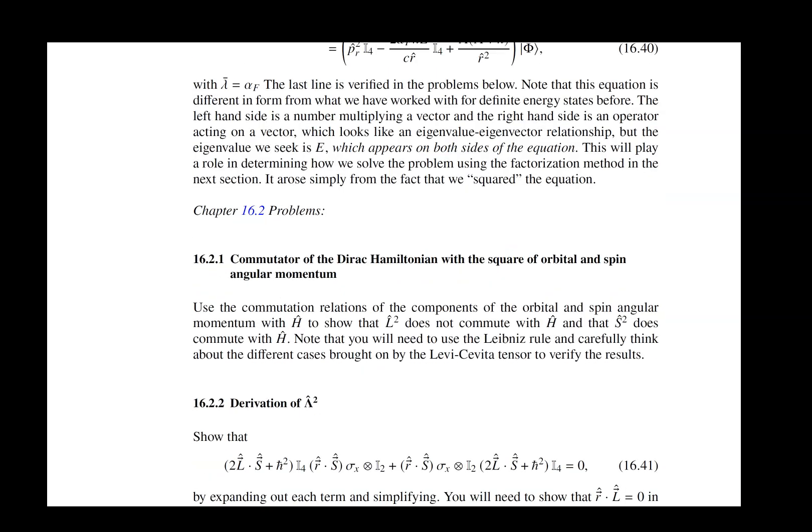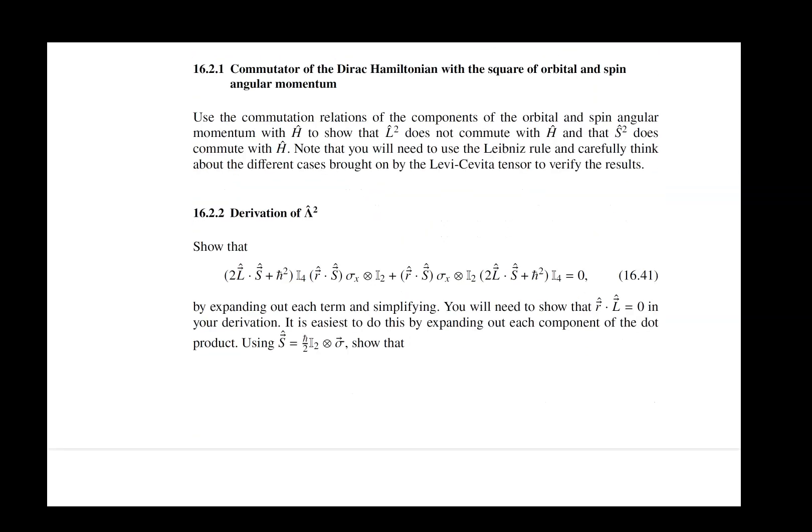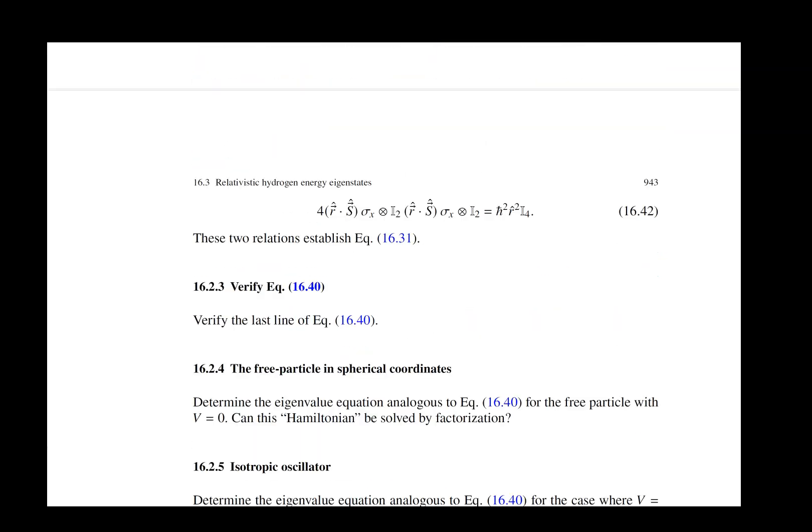This actually complicates the way that we work with things, because we like being able to work with states that have definite orbital angular momentum. Now we can only work with states that have definite total angular momentum, and that's linear combinations. This is part of the complications we get into when solving the problem.